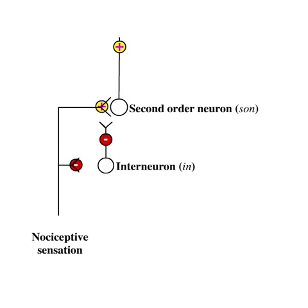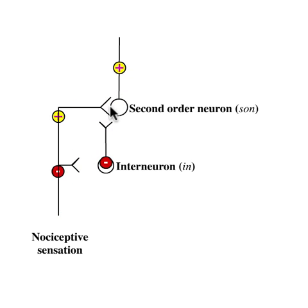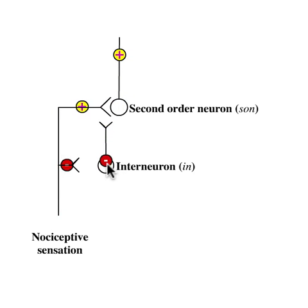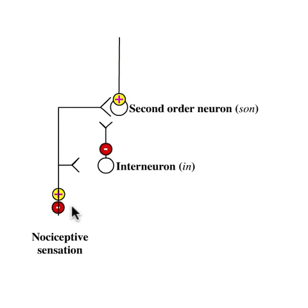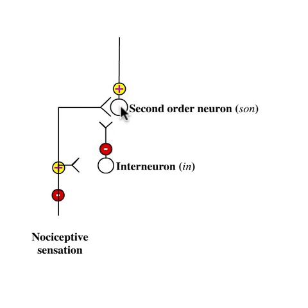According to the gate control theory of pain, the nociceptive fibers make two connections: the first one is to the second order neuron and the second one is to the interneuron. The effect of impulses going up the nociceptive fibers on the second order neuron is excitatory. However, the impulses reaching the interneuron are inhibitory. Since the interneuron is inhibitory on the effect of the nociceptive fiber on the second order neuron, the net effect of impulses running up the nociceptive fibers to the interneuron is to disinhibit the excitatory stimulation of the second order neuron.